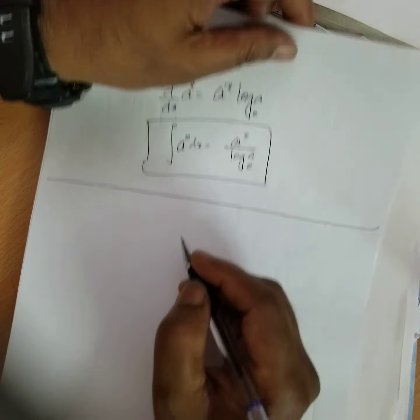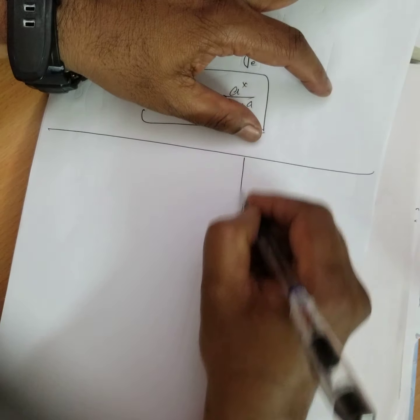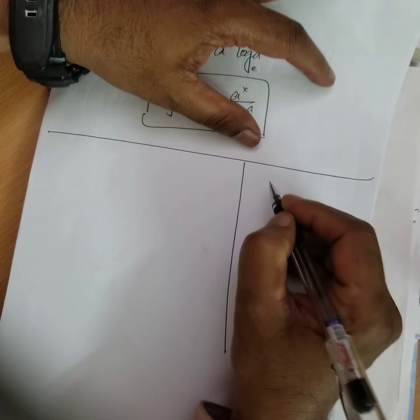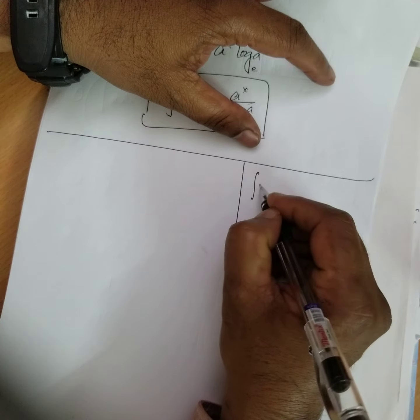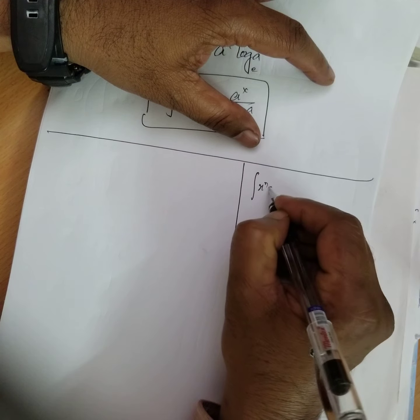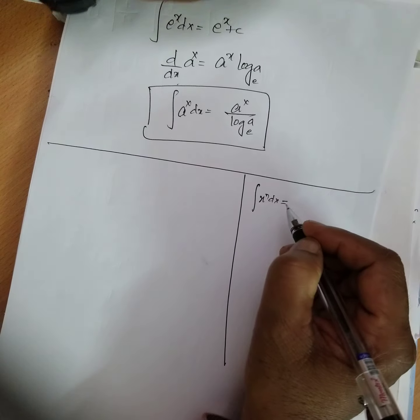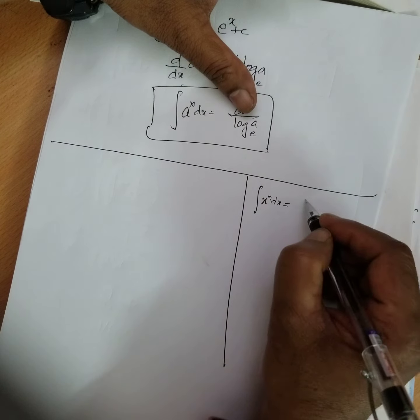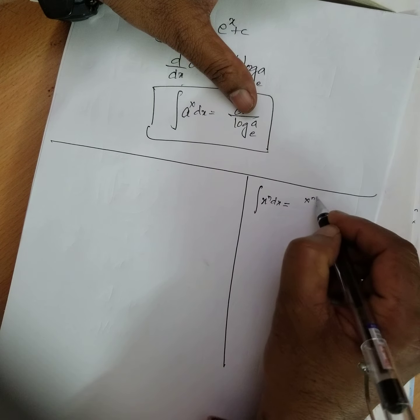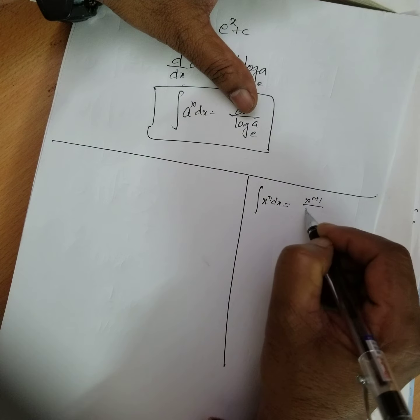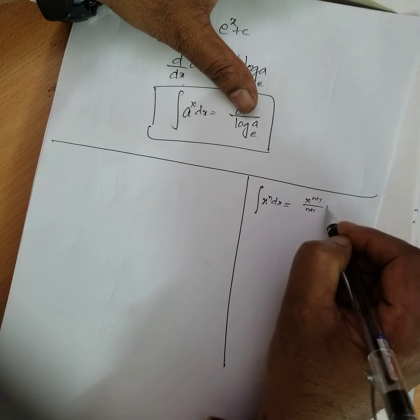Now summarizing the integration formulas: integration of x to the power of n dx equals x to the power of n plus 1 divided by n plus 1 plus c.